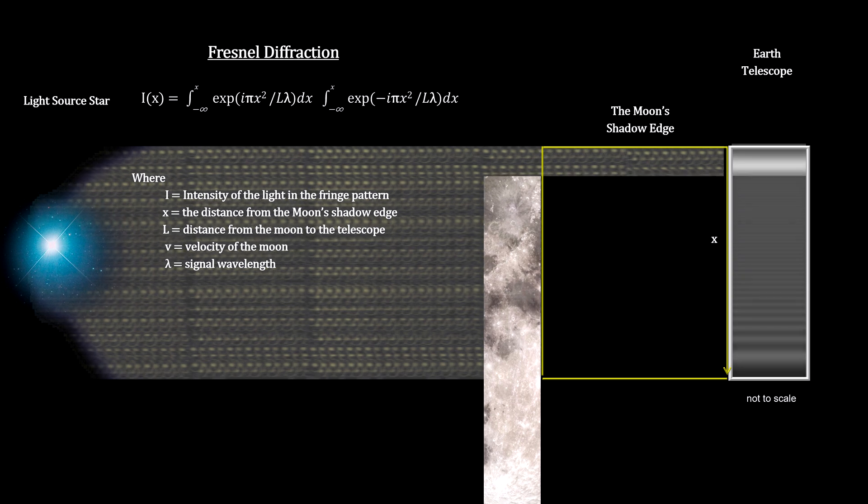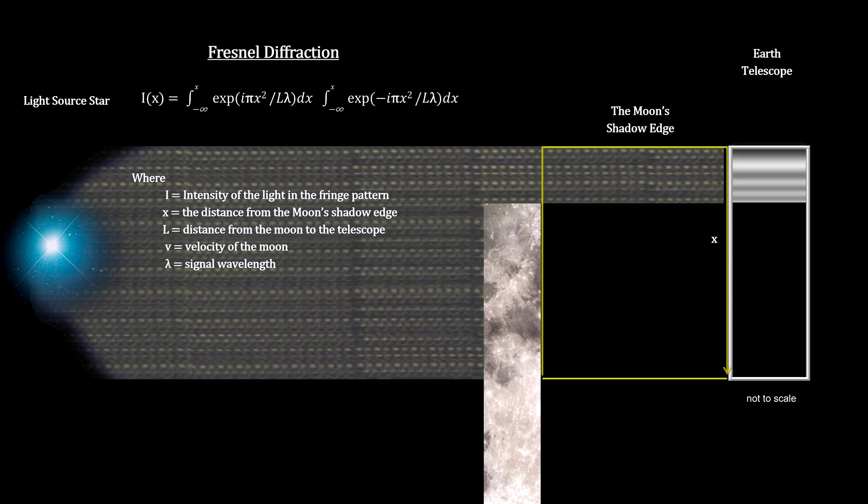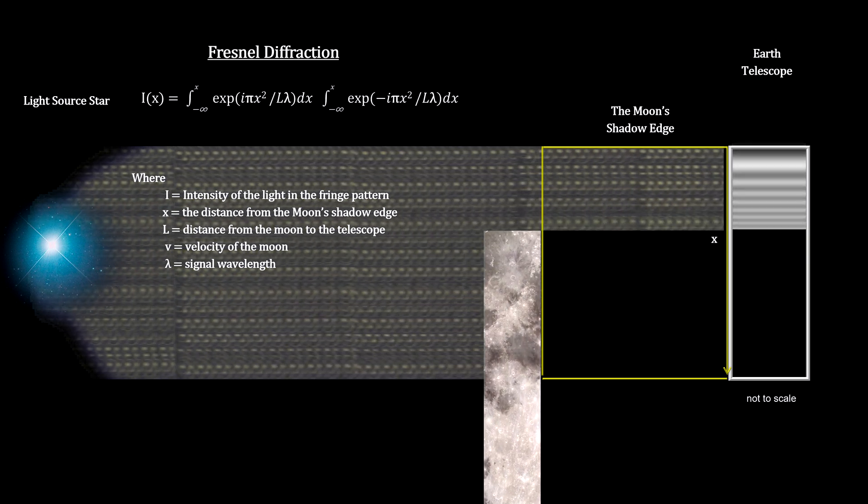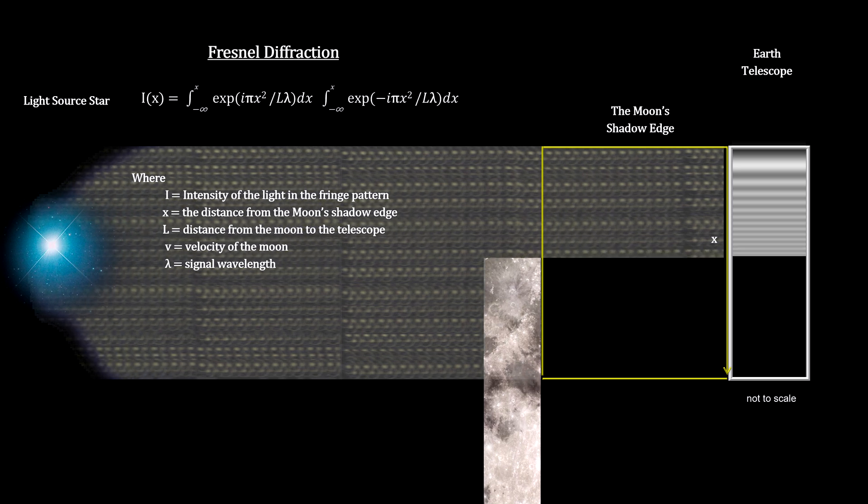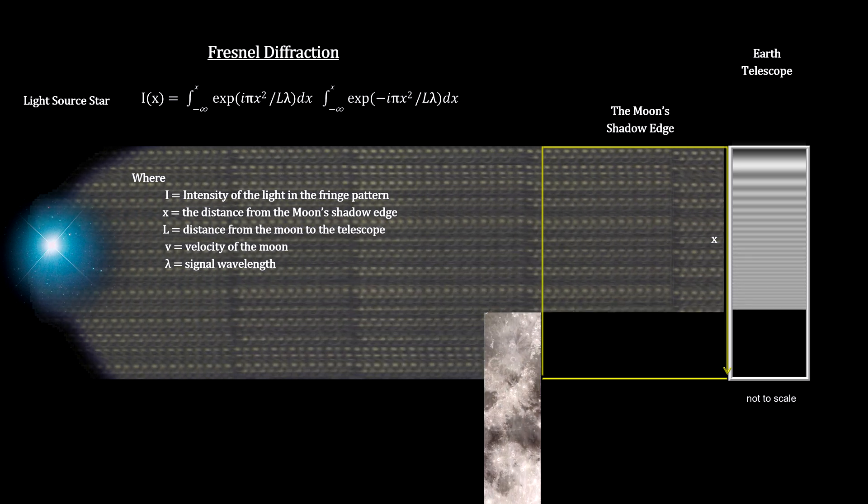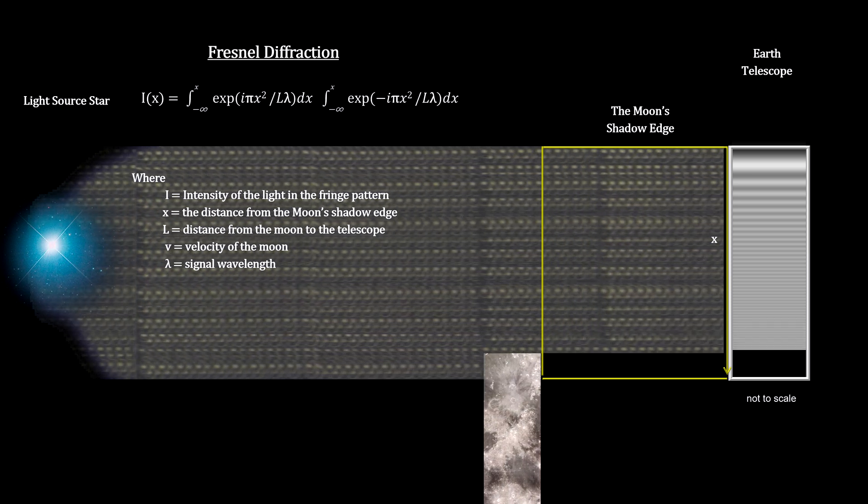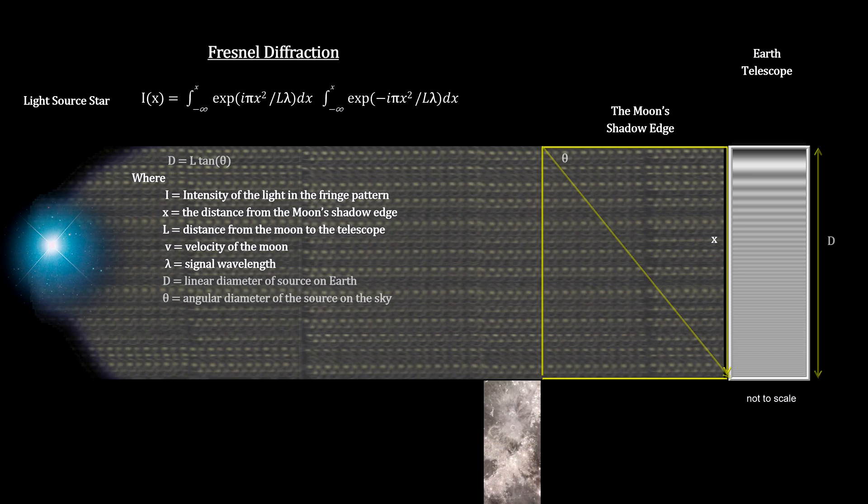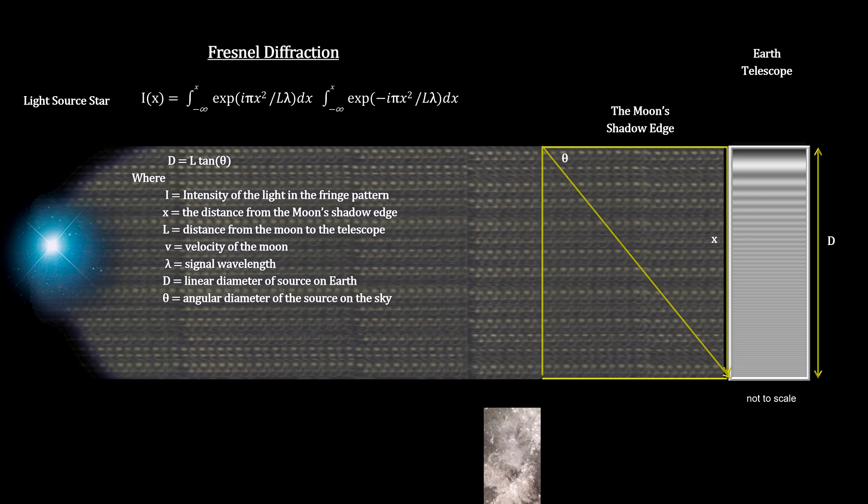Exact knowledge of the location and velocity of the Moon's edge gives us the exact location of the star on the sky, and it gives us the intensity of the light at any distance from the geometric shadow's starting point. It also provides us with the size of the source on the sky.